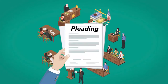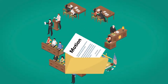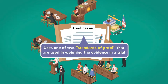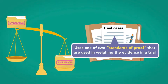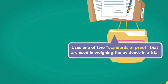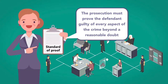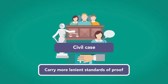In civil cases, each party filing a pleading or making a motion has the legal mandate to prove the claims in the filing. This is called the burden of proof. In civil cases, that burden uses one of two standards of proof that are used in weighing the evidence in a trial. Most people are familiar with the standard of proof in a criminal case, which is that the prosecution must prove the defendant guilty of every aspect of the crime beyond a reasonable doubt. But civil cases carry more lenient standards of proof.